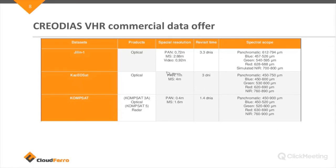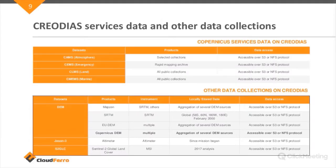We also have contracts with Chinese and Kazakhstani companies, so we have very high-resolution satellite products that can be ordered on demand — this has to be agreed with our sales department. We also have Copernicus Services data and some other collections. This data is available from our virtual machines, and generally speaking, everybody who is registered to CREODIAS can have free access to all the satellite data delivered by the European Space Agency.